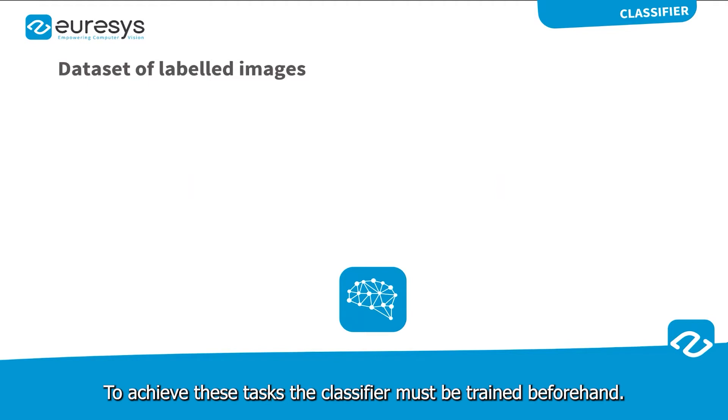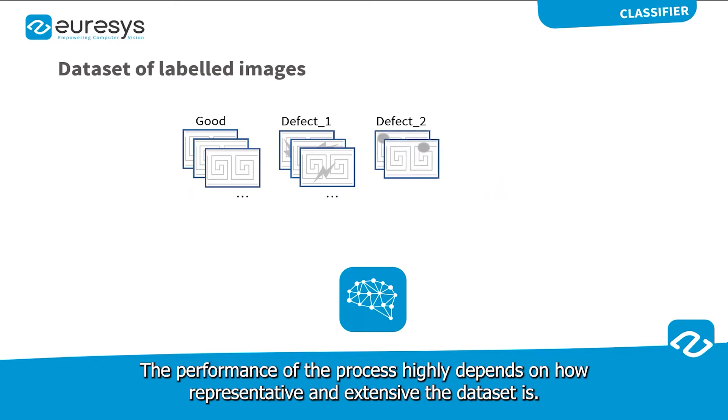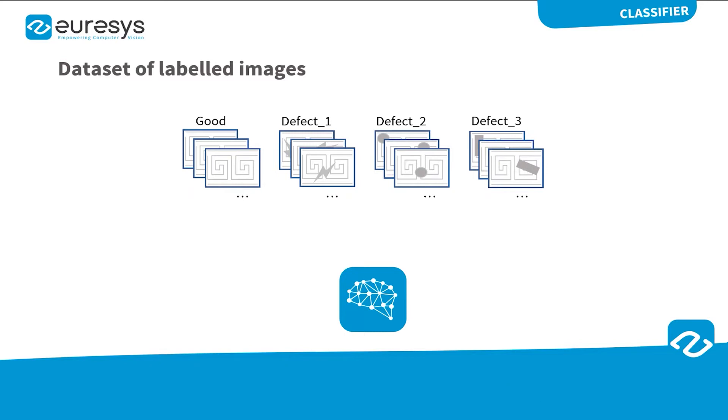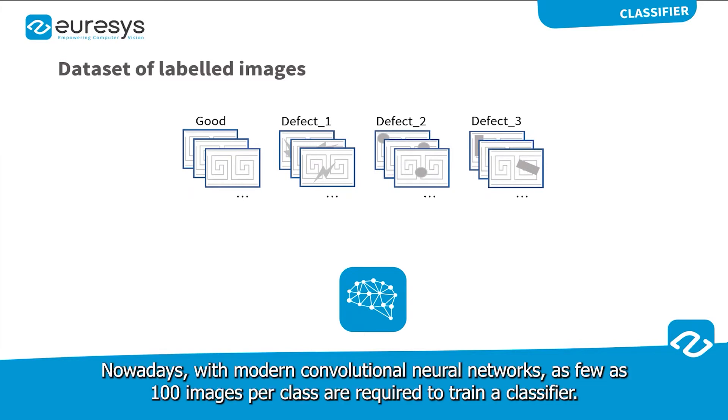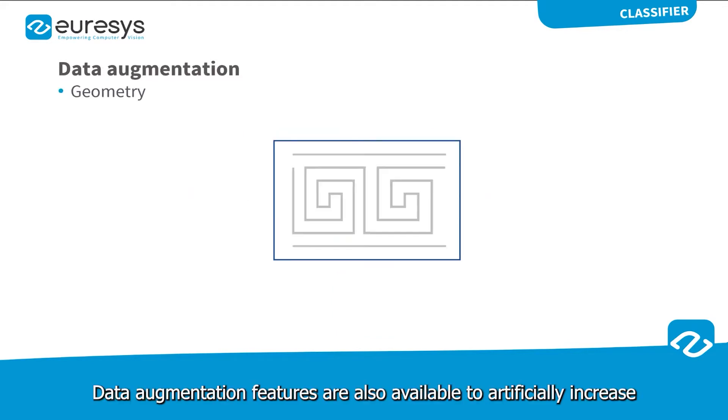To achieve these tasks, the classifier must be trained beforehand. The training is based on a set of labeled images, the so-called dataset. The performance of the process highly depends on how representative and extensive the dataset is. Nowadays, with modern convolutional neural networks, as few as 100 images per class are required to train a classifier.